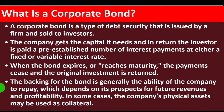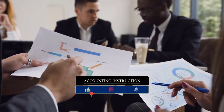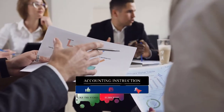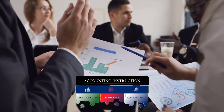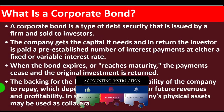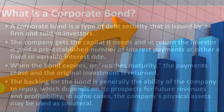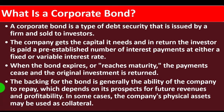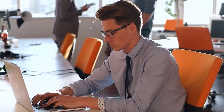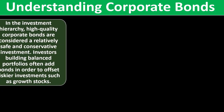When the bond expires or reaches maturity, payments cease and the original investment is returned. The backing for the bond is generally the company's ability to repay, which depends on its prospects for future revenues and profitability. You want to assess whether the company is a going concern — able to continue generating revenue to pay back the bond. In some cases, the company's physical assets may be used as collateral if they don't have sufficient cash flow.